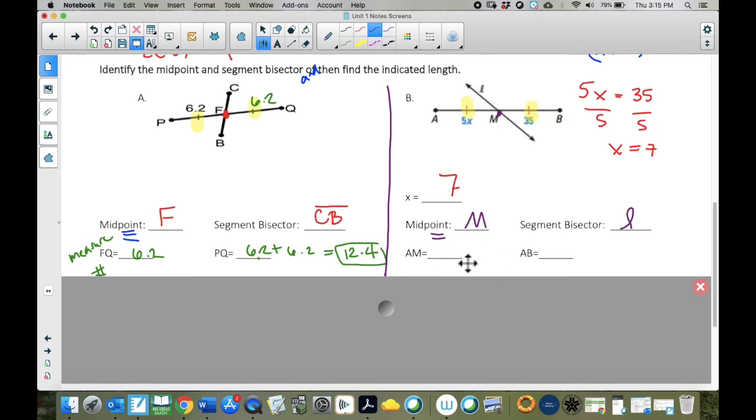How long is AM? How long is AB? Well, let's look. AM has to be 35. There's two reasons for that. One is, it's congruent to this one. Another is, we found X is 7, and we took a 7 and plug it in, we get 35. So AM is 35. If this is 35 and this is 35, then how long is the whole thing? Well, it's 35 plus 35. We're going to get out our calculator, we're going to put that in there, and we get 70.